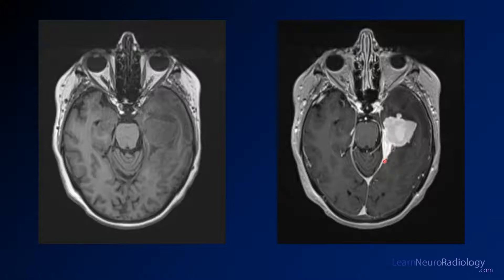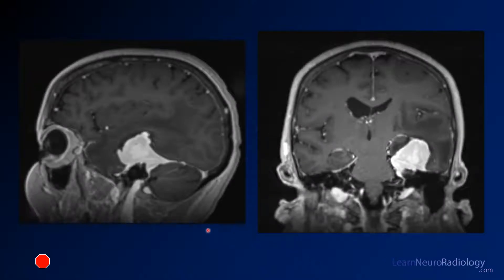This is a classic finding for an extra-axial mass called a dural tail, which leads you to believe this is probably a meningioma — although it can often be difficult to distinguish whether a mass is extra-axial or intra-axial. Additional post-contrast T1 images show involvement of the tentorium, extension along the petrous portion of the temporal bone, and significant displacement and edema of the temporal lobe. Asymmetry of the lateral ventricles confirms significant mass effect.